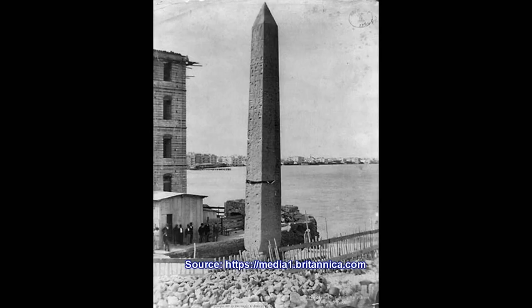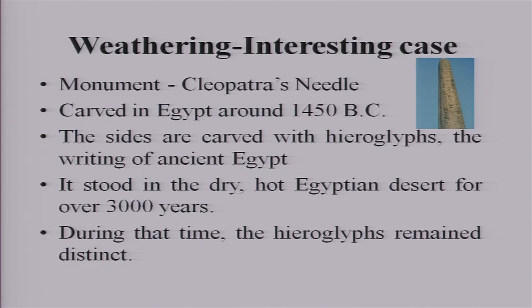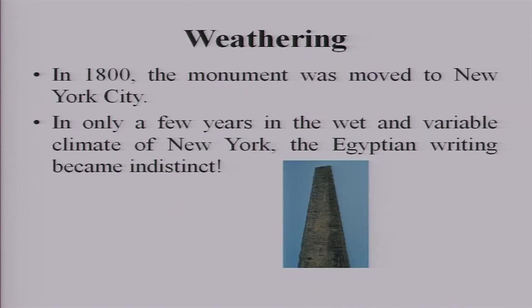I will tell an interesting story to you. There is a monument which is called Cleopatra's Needle. This was in Egypt in 1450 BC, and for 3000 years the Egyptian writings were unaltered — you could read them. But later, in 1800, the monument was moved to New York. When this was moved to New York, within a few years, because of the wet and variable climate of New York, the Egyptian writing became indistinct.